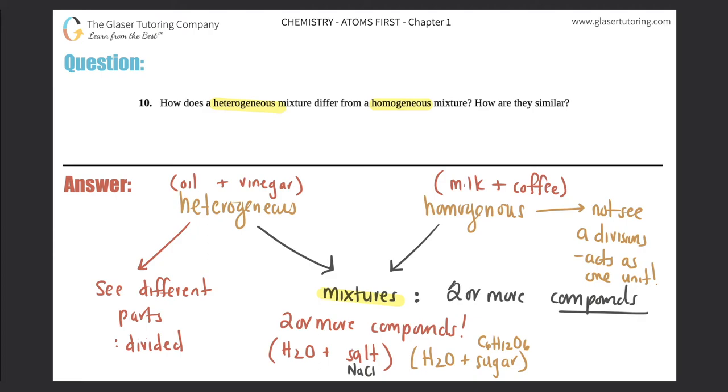Another example would be any soft drink for a homogeneous mixture—so Coca-Cola, Pepsi, Sprite. If you look in the ingredients, there's tons of ingredients, aka tons of compounds, so it's got to be a mixture. And since when you pour it there's only one unit, there's only one color, you can't tell the difference between where all the compounds are, so it's homogeneous.